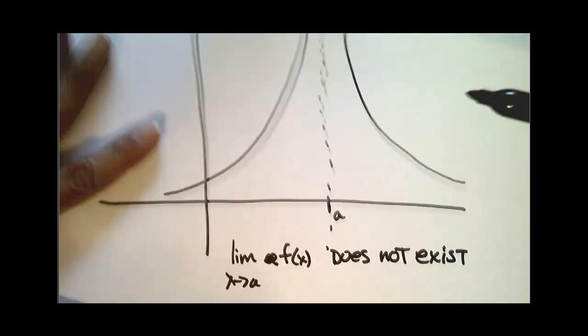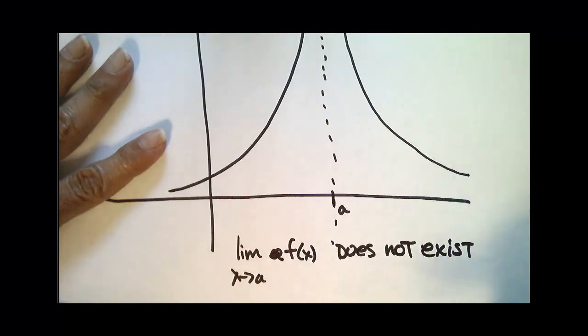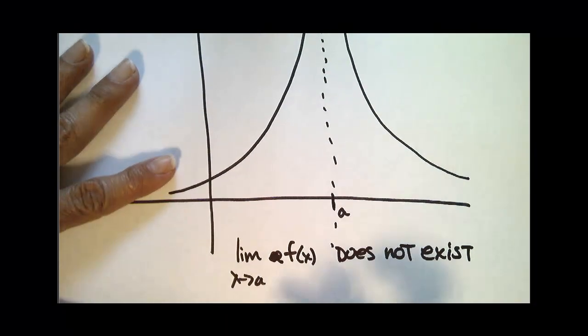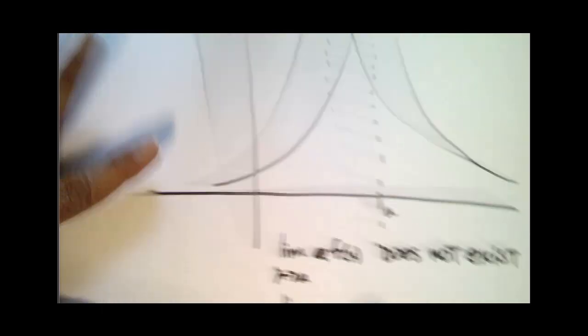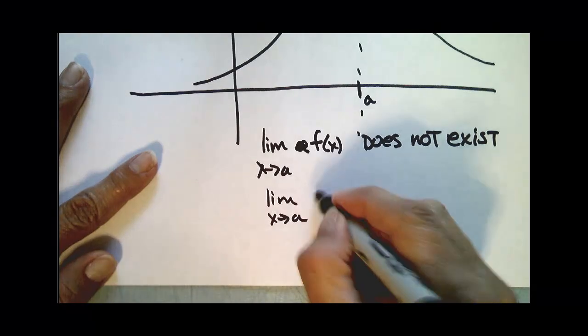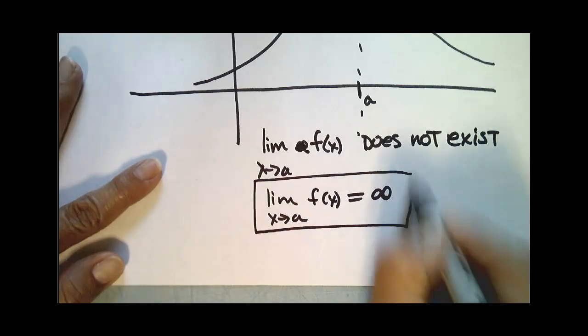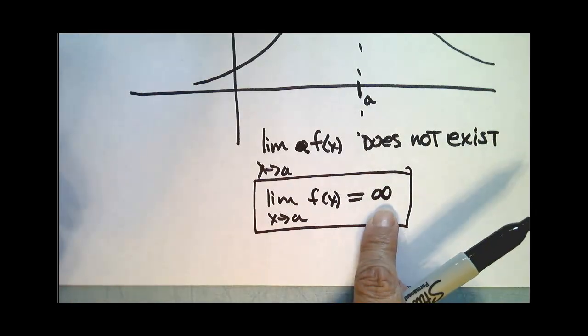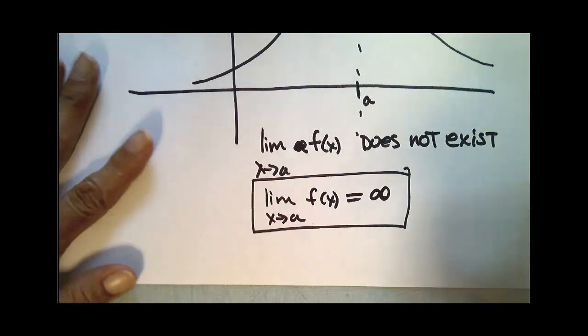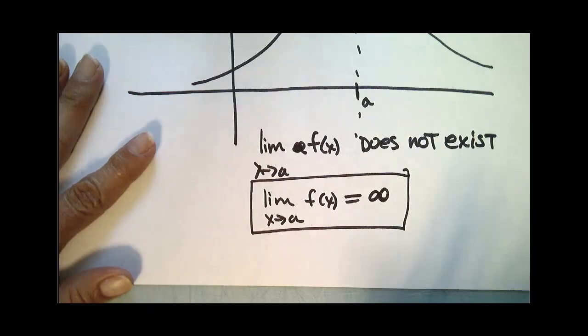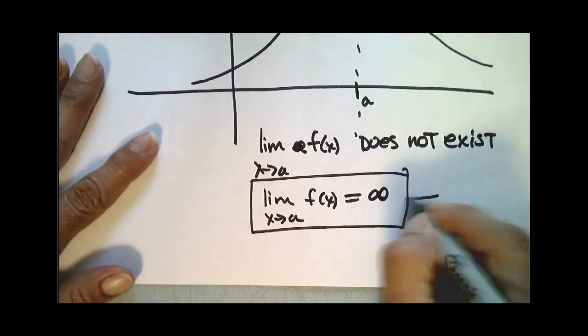But in cases of infinity, we usually include what behavior it doesn't exist. So you would say, the limit as x approaches a of f of x equals infinity. Now this answer is sufficient. It tells me, not only that the limit doesn't exist at a, but that it doesn't exist at a because it tends towards infinity. So this is the preferred answer.